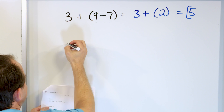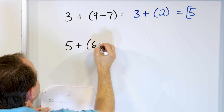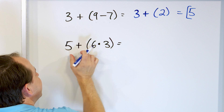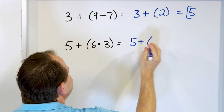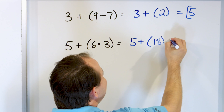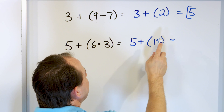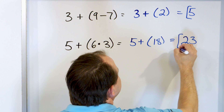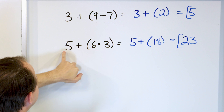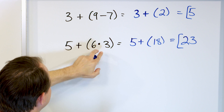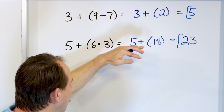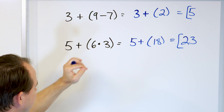Next problem: five plus parentheses six times three. Do what's inside the parentheses first — so I can't do five plus anything yet. Six times three is 18. Now the parentheses disappear and I do five plus 18, which is 23. The answer is 23. If you ignore the parentheses and do five plus six first, you get 11, then 11 times three is 33 — completely wrong. Always do the parentheses first.